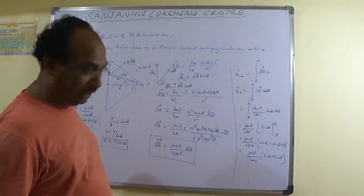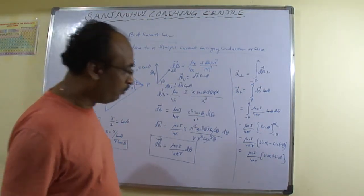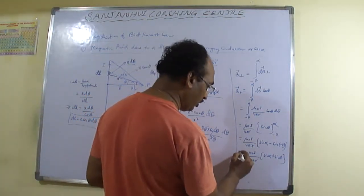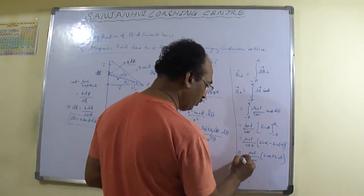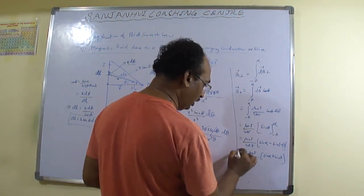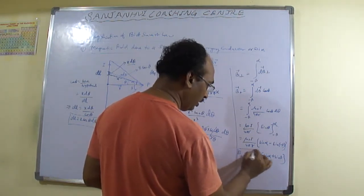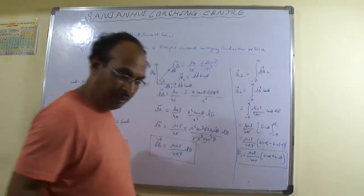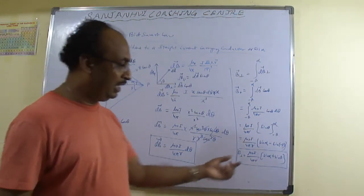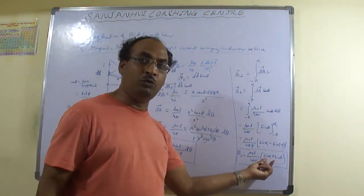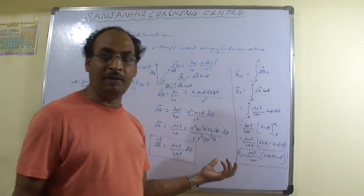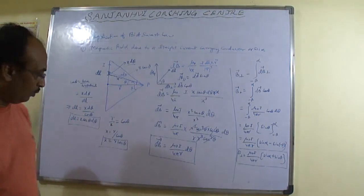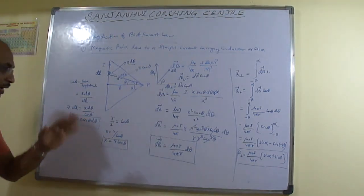So the perpendicular component of the magnetic field due to a finite current-carrying conductor is B⊥ equals μ₀I / 4πR times (sin α + sin β). By putting different values of alpha and beta, we can find the magnetic field for various configurations.